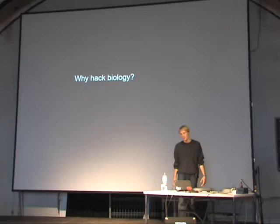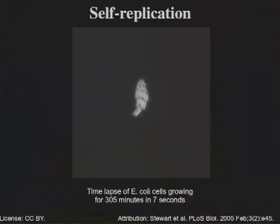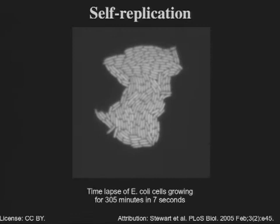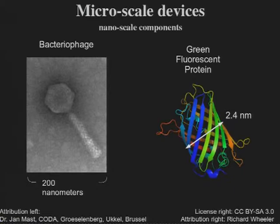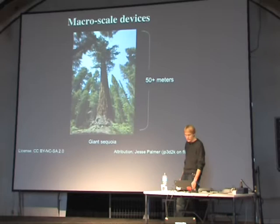Why would we want to hack biology? Biology is a very different system from the ones we usually work with, but it has some nice properties such as self-replication. If we program one cell, it'll self-replicate. We can build microscale devices — this is a bacteriophage virus that attacks bacteria, 200 nanometers or a little bit less, and one of the component parts that goes inside a cell is 2.4 nanometers. So you could say this is a kind of nanotechnology: devices themselves are microscale, components at nanoscale.